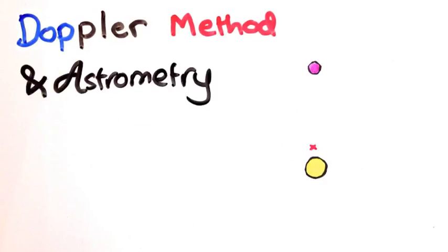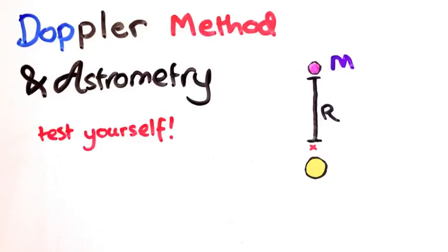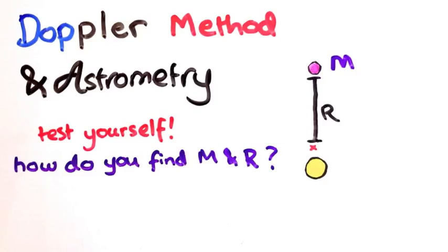So that's how the astrometry and Doppler methods work, and their pros and cons. I said that both methods let you estimate the planet's radius and mass, but I only gave you an outline of how to do that. If you're interested in testing yourself, figure out how you do it from the raw data.